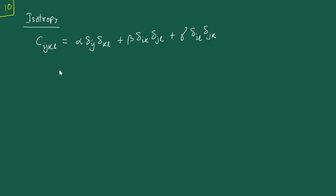Now in terms of making the connection from the fourth order tensor to the isotropic tensor, note that we had previously mentioned there are only two independent constants, but here tensor algebra is telling us there are three independent constants. So what is going on? Let's see that although it is written as three, in fact there are actually only two.